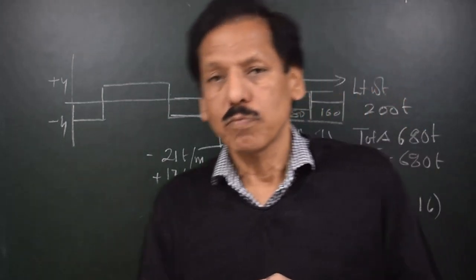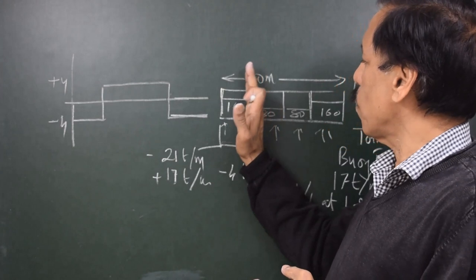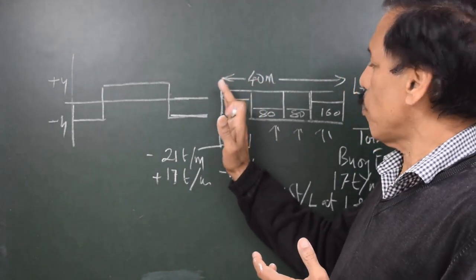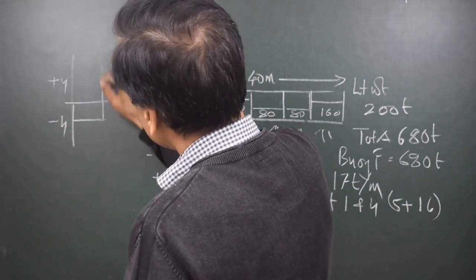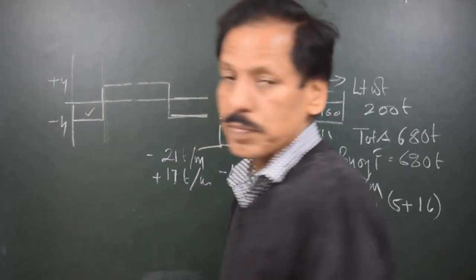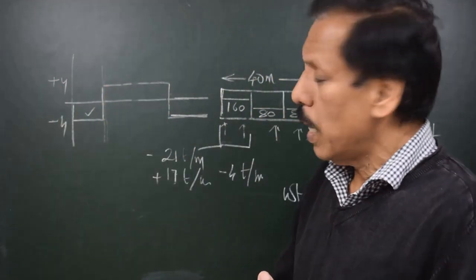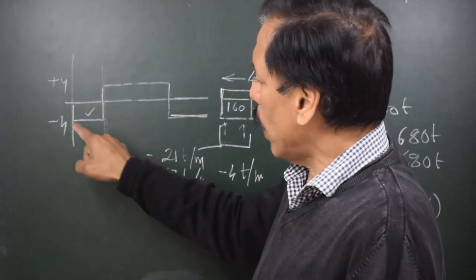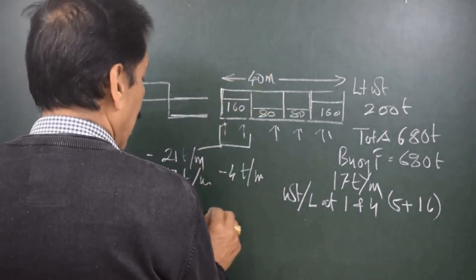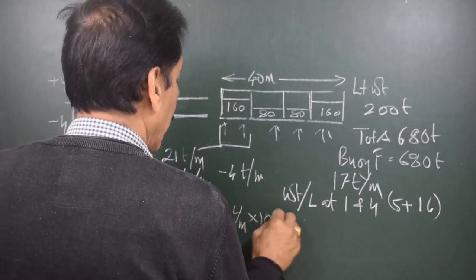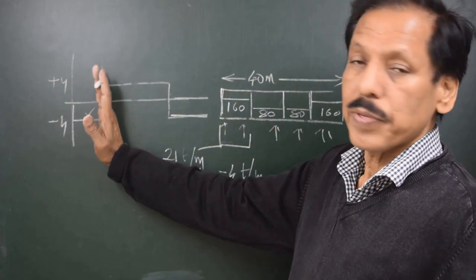Our aim is to find the shear force acting at any point. Suppose I want to find the shear force acting on the bulkhead between hold 1 and hold 2. On the load curve, I draw a screen and find the area under the load curve up to the point of consideration — the bulkhead between holds 1 and 2. The value is minus 4 throughout that hold and the distance is 10 meters, so minus 4 × 10 = minus 40 tons. The shear force at that bulkhead is minus 40 tons.